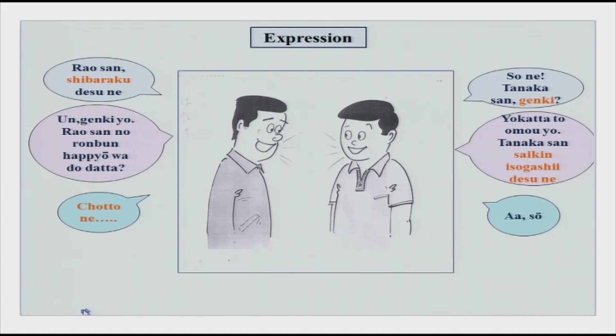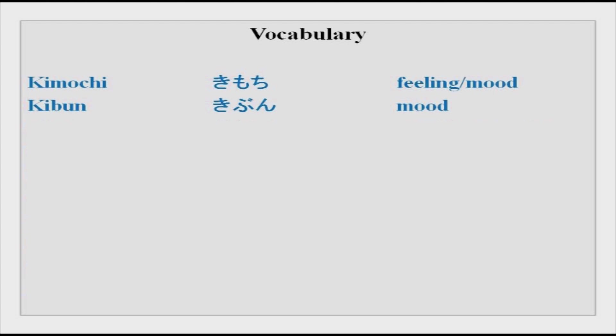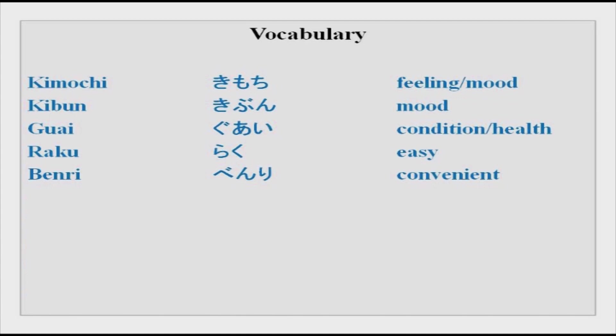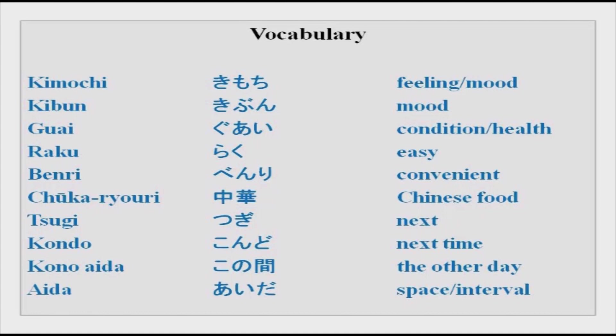Vocabulary: kimochi and kibun almost mean the same thing. Guai is general condition of health. Raku is easy. Benri is convenient to use or to move about. Chuuka is Chinese food or cuisine. Tsugi is next. Kondo is next time. Kono aida is the other day or a particular day. Aida is in between, interval, or space. Use these in sentences and make your own sentences.